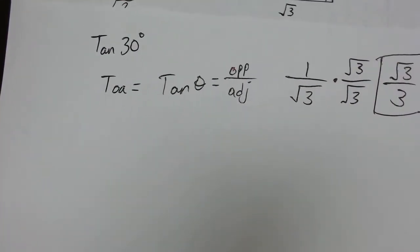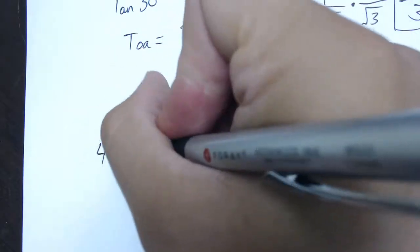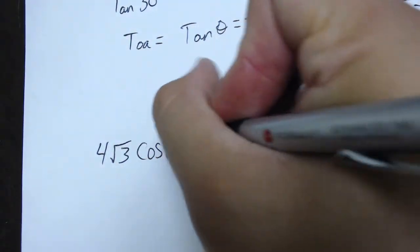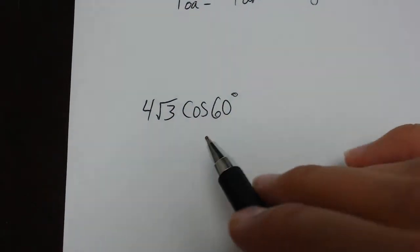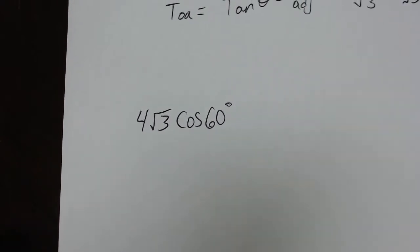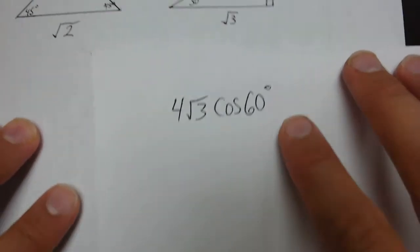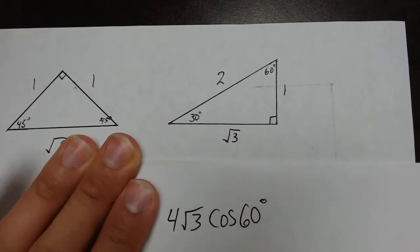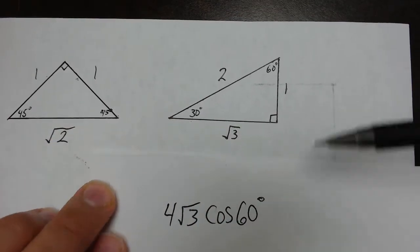They do a little bit harder ones, and they will tell you to evaluate things like 4 times the square root of 3 times the cosine of 60 degrees. So what this requires us to do is find the cosine of 60 degrees and multiply it by 4 square root of 3. I'm going to fold my paper here so we can see our reference triangle.